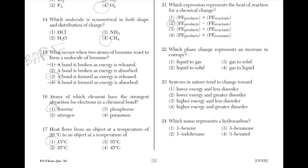Which phase change represents an increase in entropy? The answer is 1: liquid to gas. Entropy increases as matter changes from solid to liquid, and then liquid to gas, with gas having the greatest entropy or disorder. This entropy is represented by the random motion of particles.